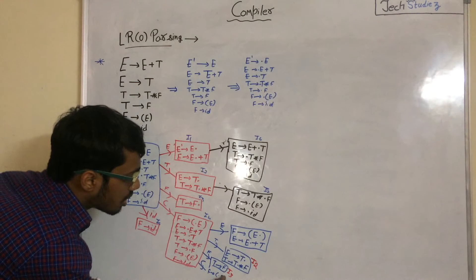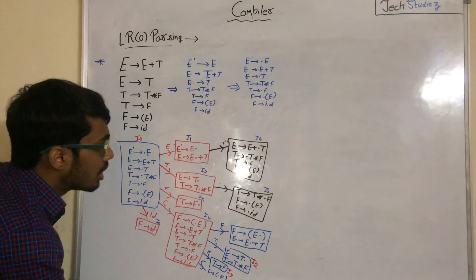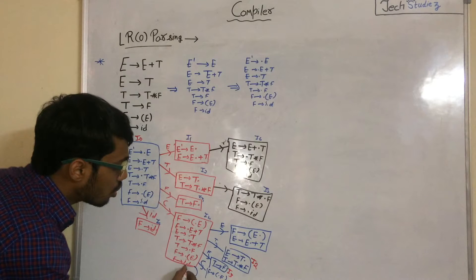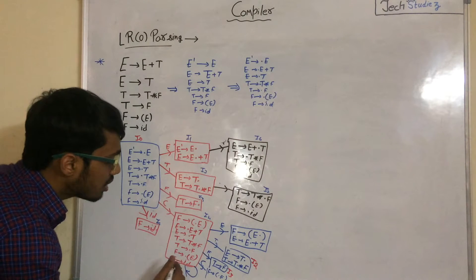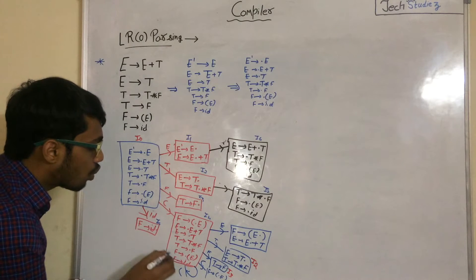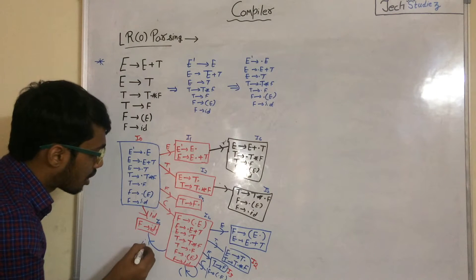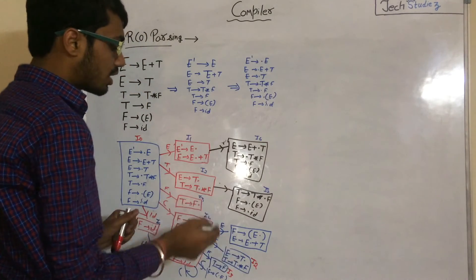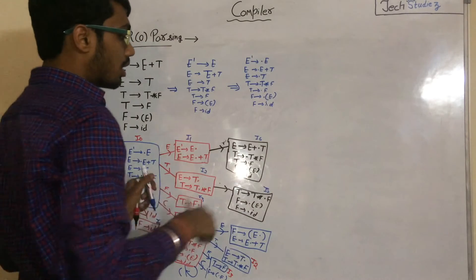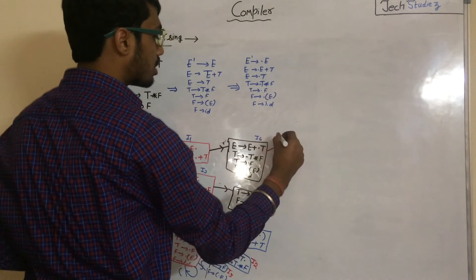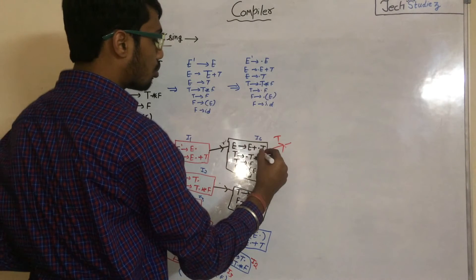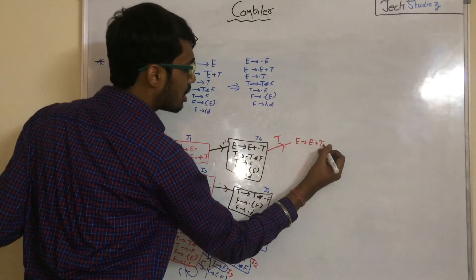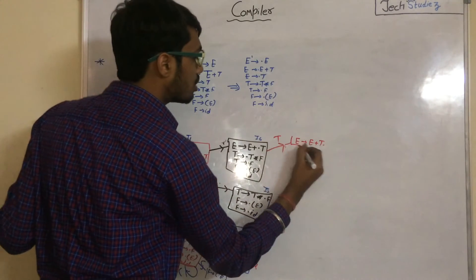If we apply GOTO with opening parenthesis we get F to (·E) and all productions from E — same production, so this is a self-loop with opening parenthesis. If we apply GOTO with id we move to I5.